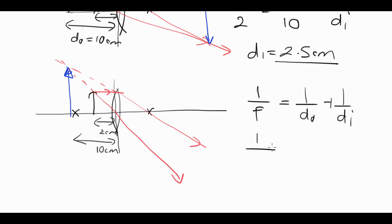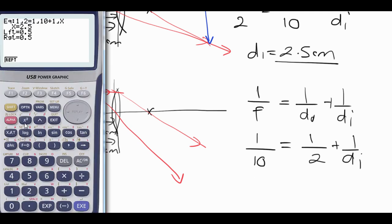Putting numbers in. It's a convex lens, so we're happy with the positive number for the focal length. It equals 1 divided by 2 plus 1 divided by di. So we'll stick that into our solver. And we're going to have 1 over 10 is equal to 1 over 2 plus 1 over x.